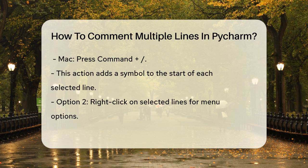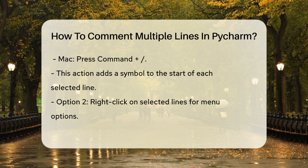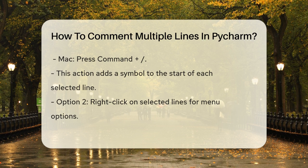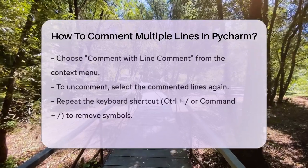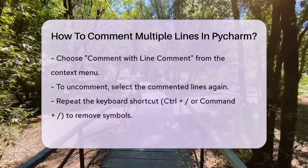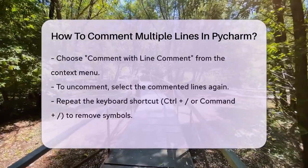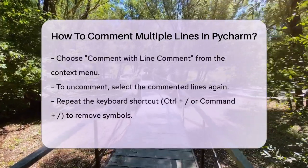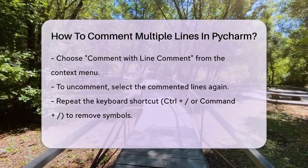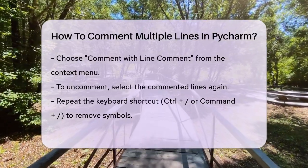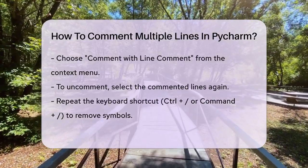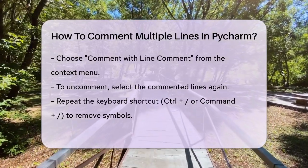This will automatically add a hash symbol at the beginning of each selected line, effectively commenting them out. If you prefer using the menu, you can right-click on the selected lines and choose 'Comment with Line Comment' from the context menu. This will also add the hash symbol at the beginning of each line.